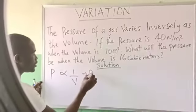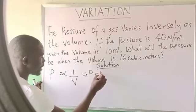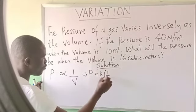So that means when I remove it, I will have P. I will remove this and put equals to k. Then 1 over what? V.